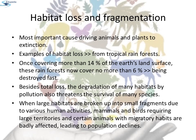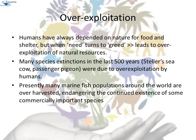The second cause is over-exploitation. Humans have always depended on nature for food and shelter, but when need turns to greed, it leads to over-exploitation of natural resources. Many species extinctions in the last 500 years, like Steller's sea cow and the passenger pigeon, were due to over-exploitation by humans. Presently, many marine fish populations around the world are over-harvested, endangering the continued existence of some commercially important species.